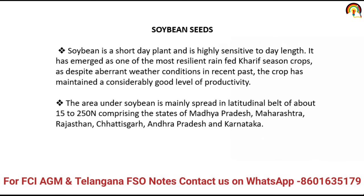Soya bean is a short day plant — we will discuss what that means shortly. It has emerged as one of the most resilient rain-fed kharif season crops. The area under soya bean is mainly spread in a latitudinal belt of about 15 to 25 degrees, comprising the states of Madhya Pradesh, Maharashtra, and Rajasthan. These are the areas where soya bean seed is primarily cultivated.